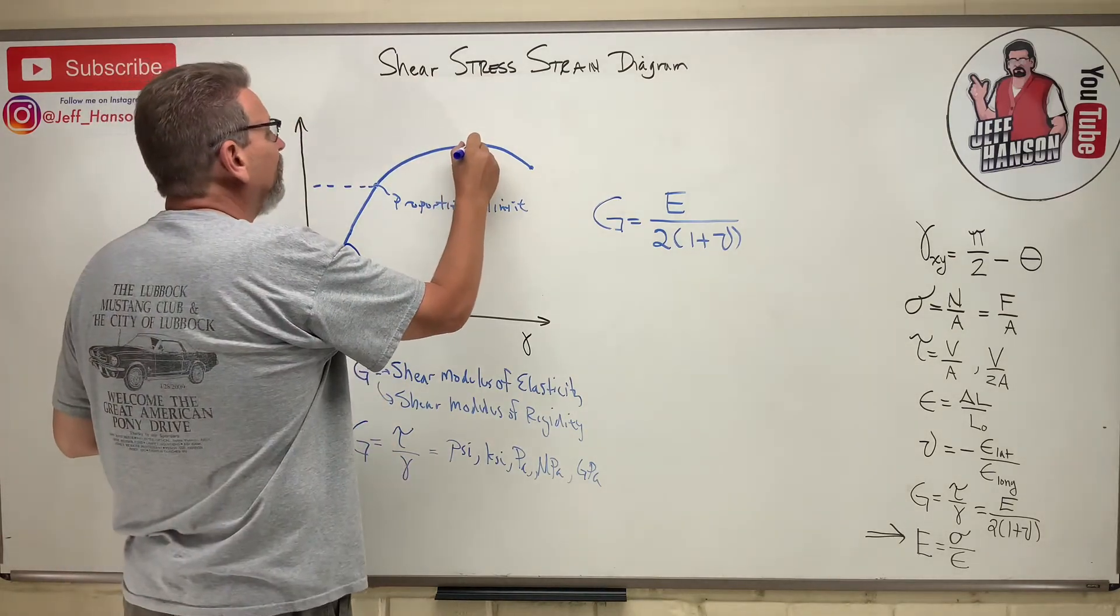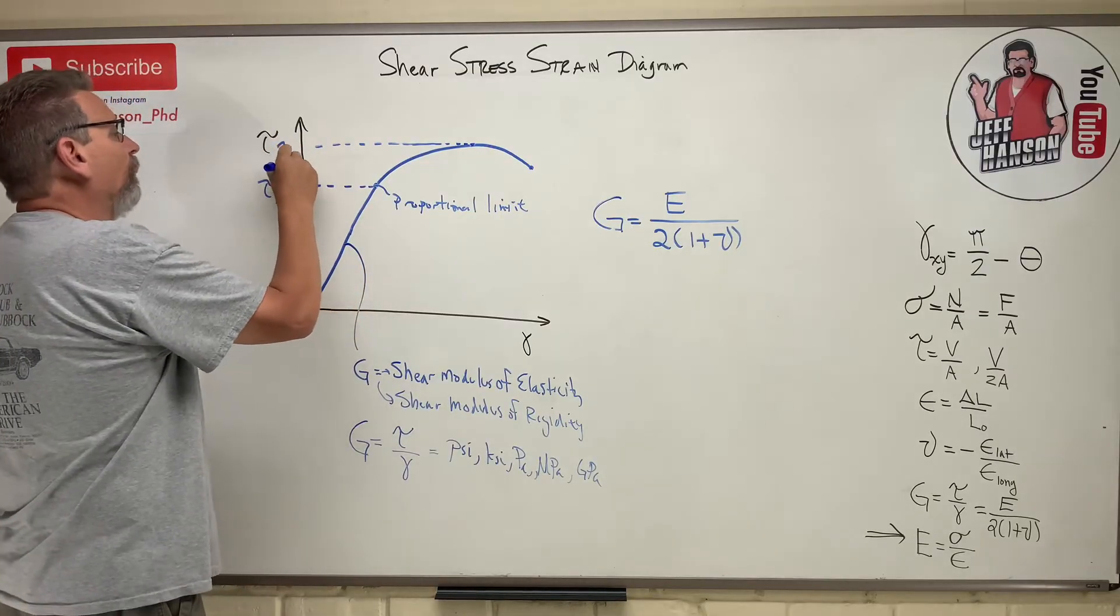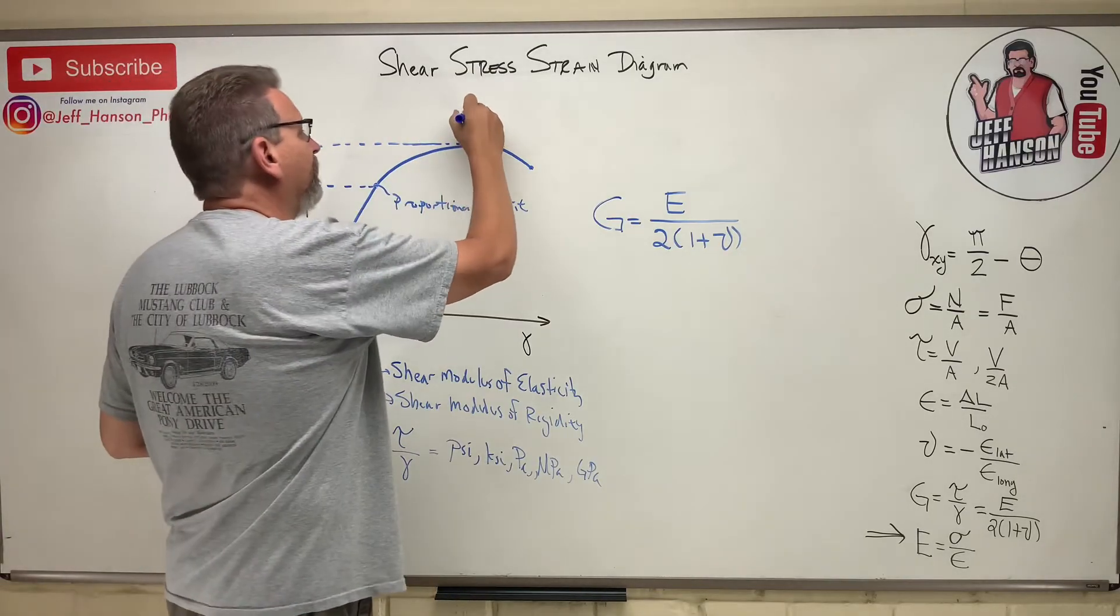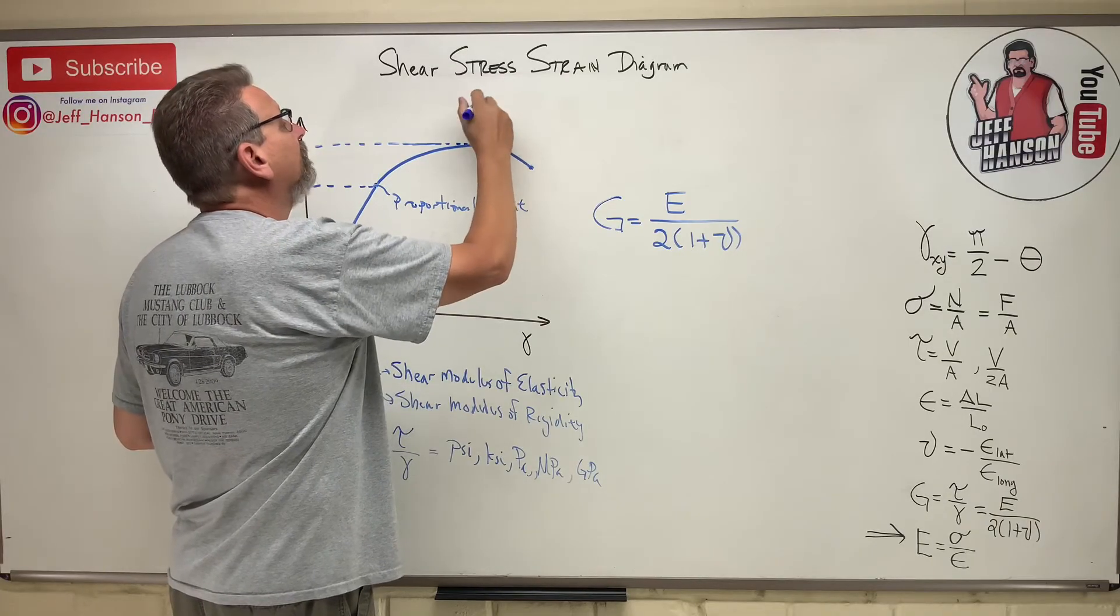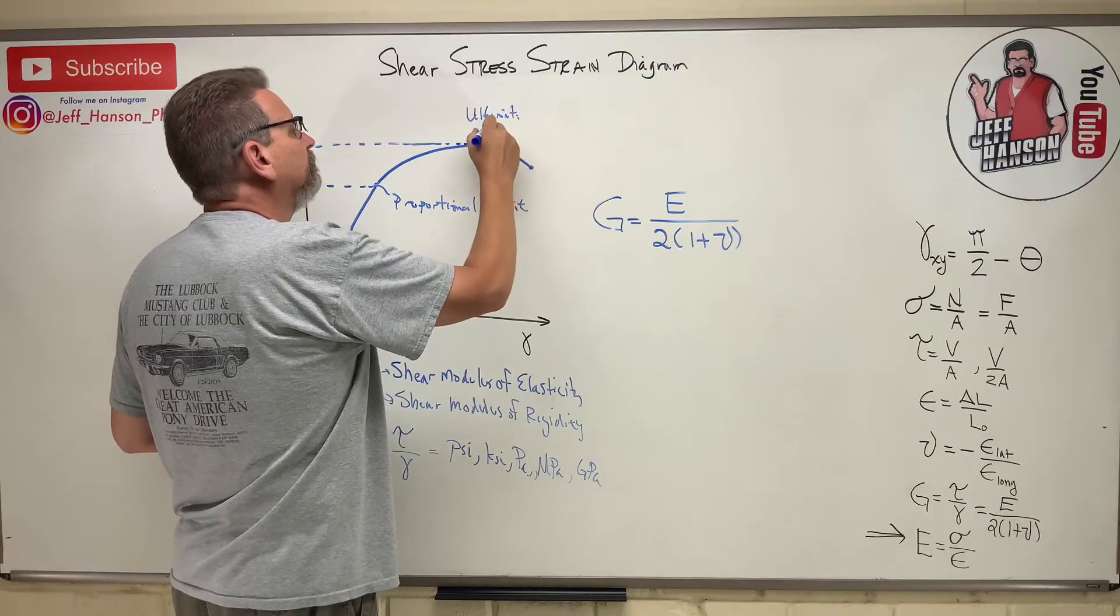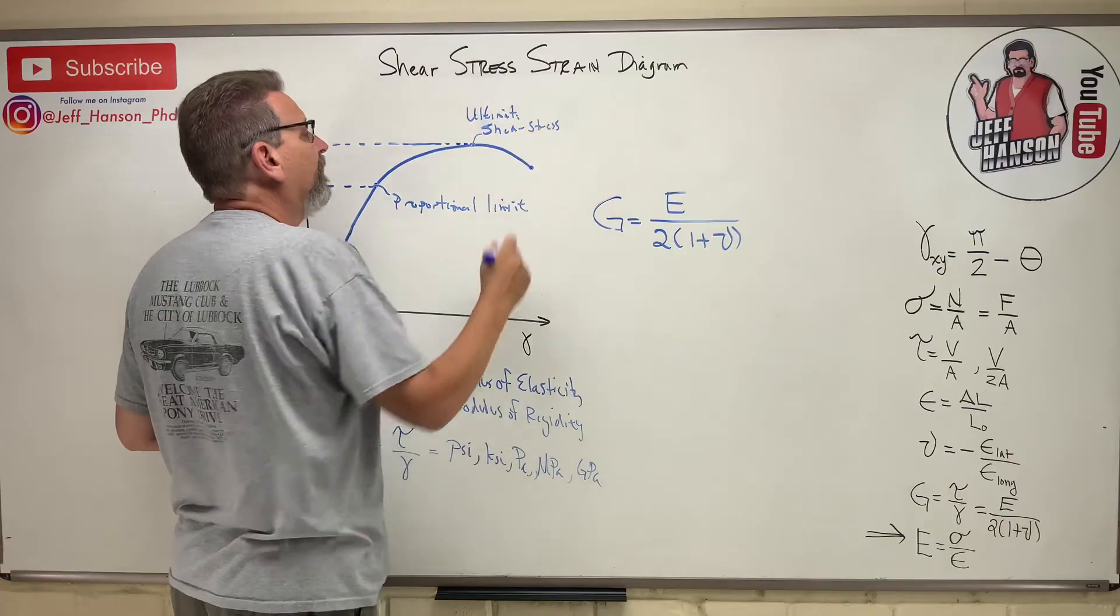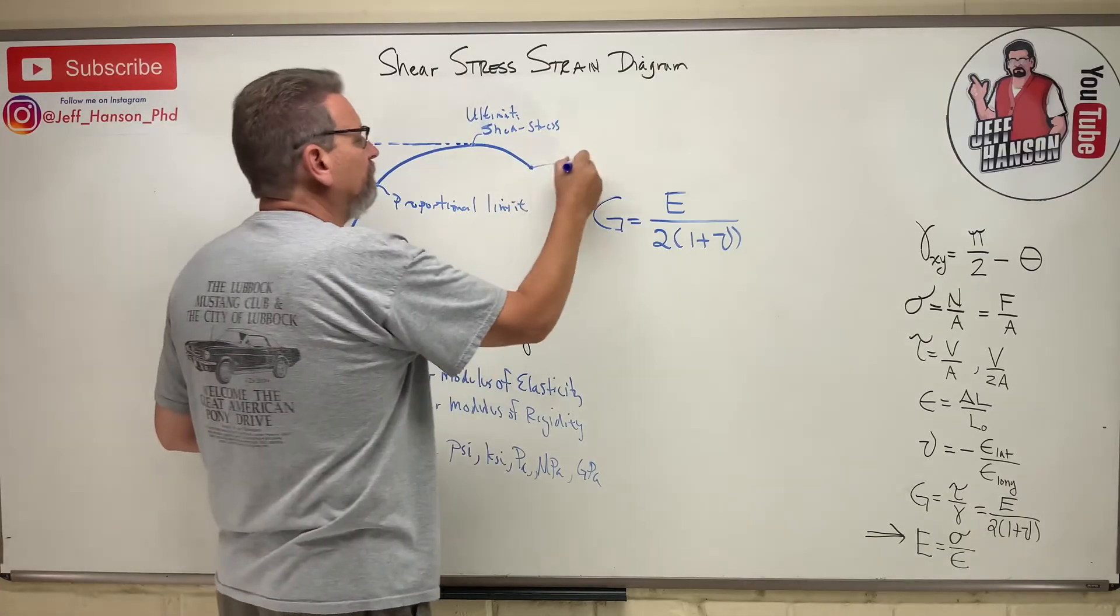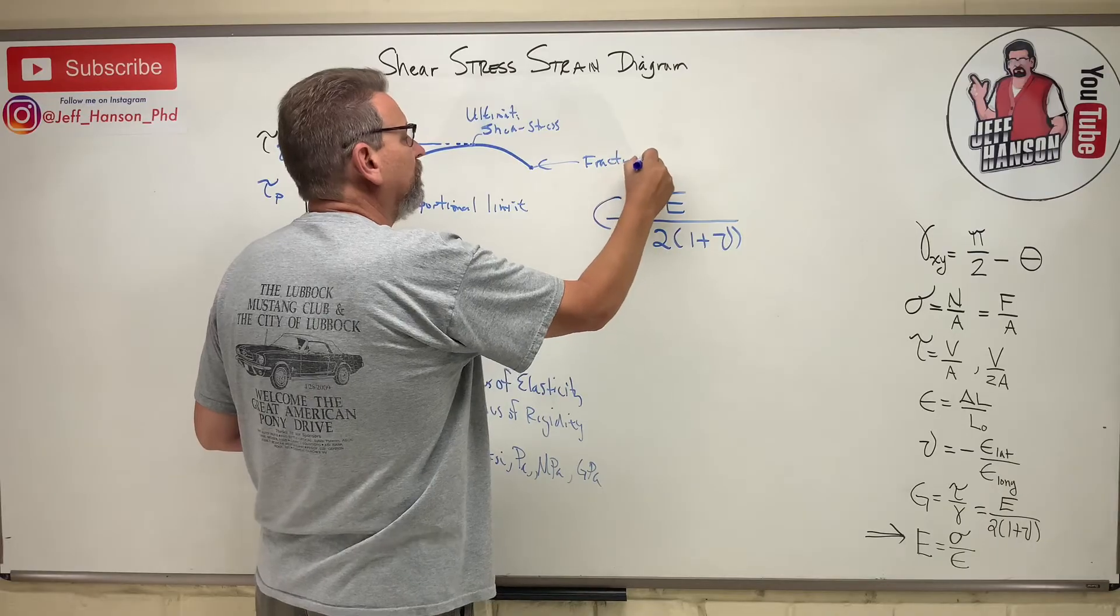Up here, same thing I have up here. I have tau ultimate. So this is the ultimate shear stress. And then of course here, just like we had before, fracture.